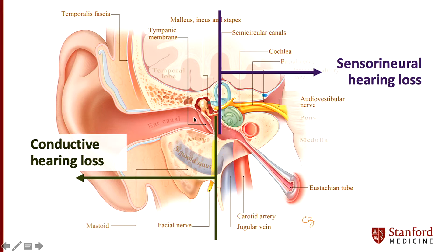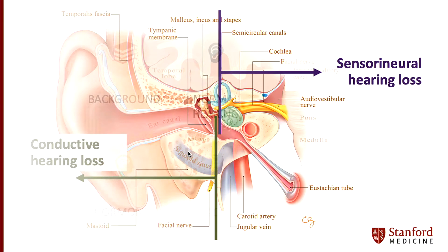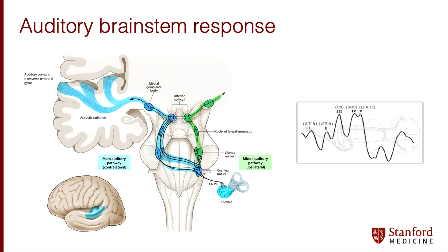One way we objectively measure hearing — outside of a hearing booth asking whether you heard a sound — is the auditory brainstem response. We place surface electrodes on an individual and can see the electrical activity generated from the cochlear nerve as it travels up the auditory pathway. Each spike in the ABR wave corresponds to synchronous firing of nerves along this auditory pathway.